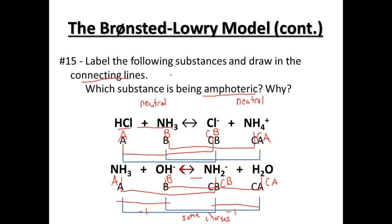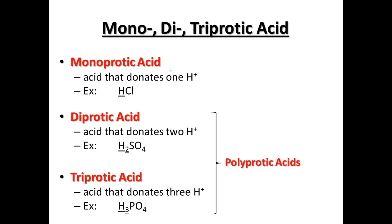Which substance is amphoteric? In this case, NH3, because in one case it's the acid, and in another case it's the base, depending on what the other substance is. Now our other idea for this section is called protic.